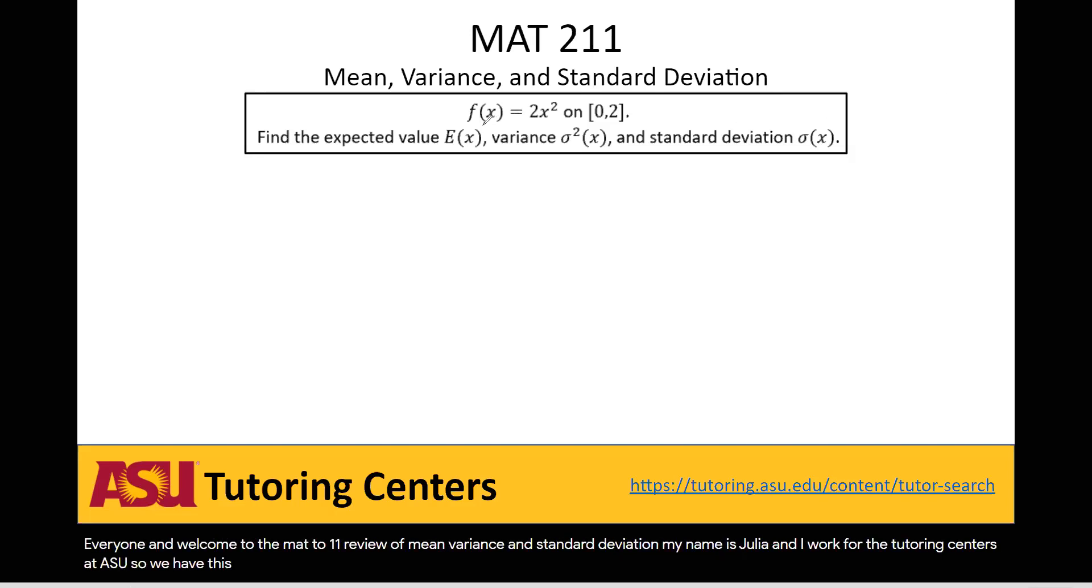So we have this function f of x equals 2 times x squared on the range 0 to 2 and we want to find the expected value E(x), the variance sigma squared x, and the standard deviation sigma x.